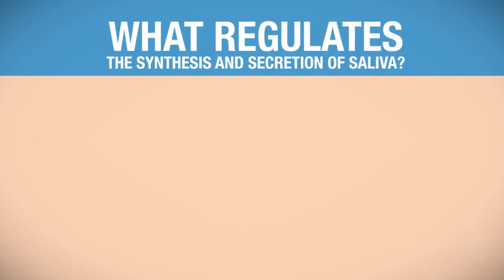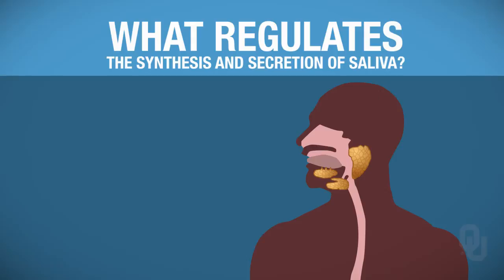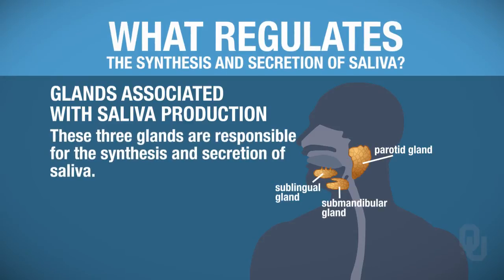So what regulates the synthesis and secretion of saliva? We're going to begin with a quick reminder about the glands associated with saliva production. Remember the parotid glands, the sublingual, and the submandibular glands — these are responsible for the synthesis and secretion of saliva.